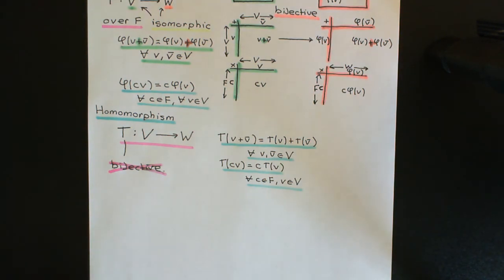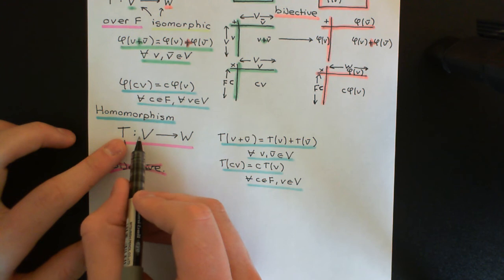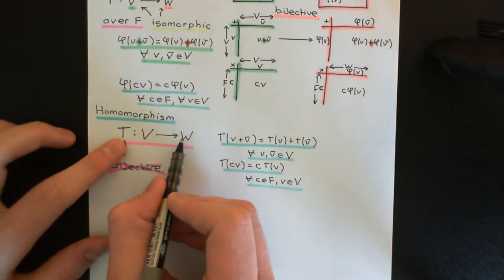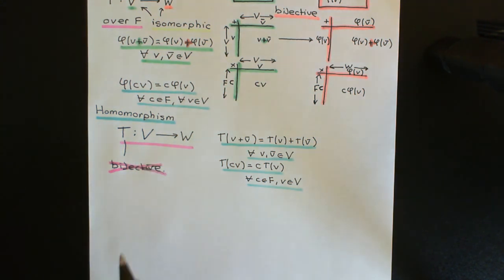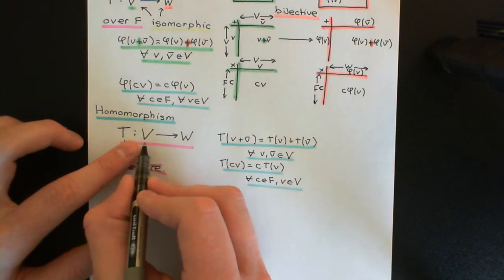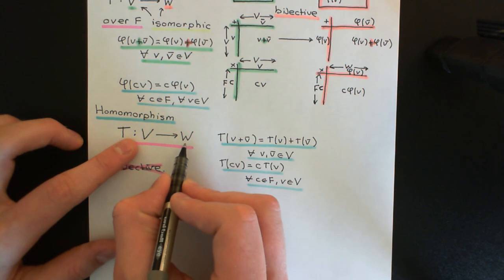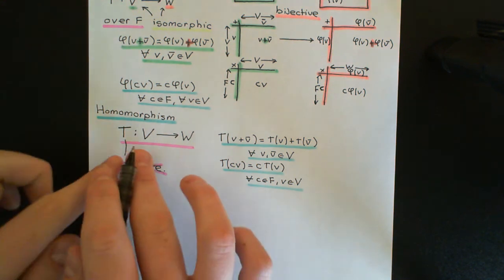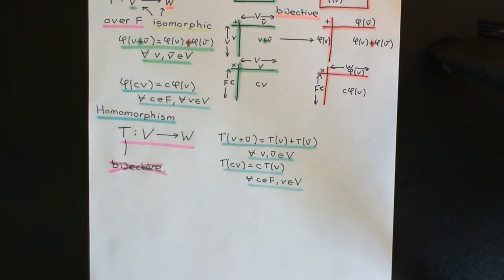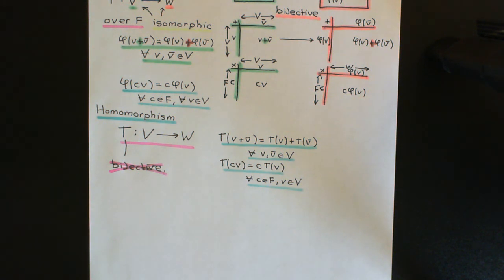Not being bijective means it no longer has to be one-to-one and it no longer has to be onto. So this mapping might be mapping all of the elements of vector space capital V onto just a subset of the elements in capital W — it doesn't need to be surjective. In addition, it doesn't need to be injective, so multiple different elements in the domain may be mapped onto the same element in the codomain. When it is bijective, a linear transformation will be an isomorphism, and that means the two vector spaces have identical algebraic structure.